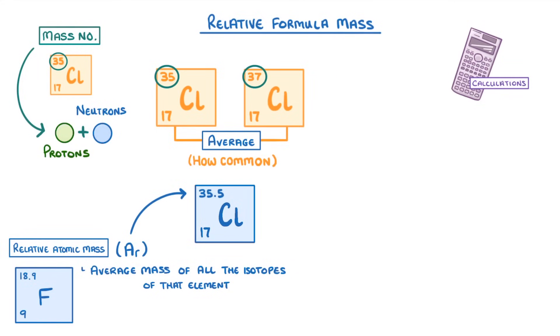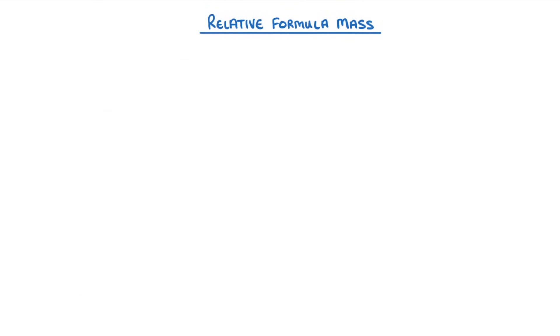But what if we want to find the average mass of an entire compound which will obviously have more than one type of element in? Well that would be the relative formula mass which we always write as Mr. To find it all we do is add together the relative atomic masses of all the atoms in that compound's molecular formula.